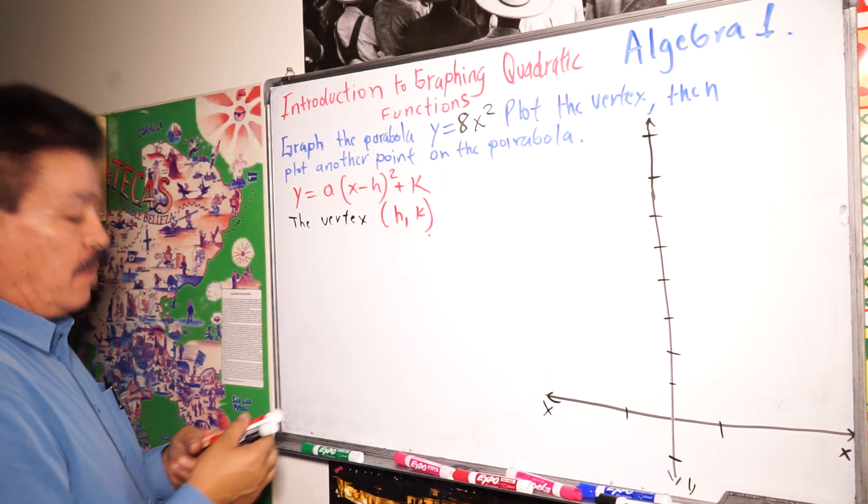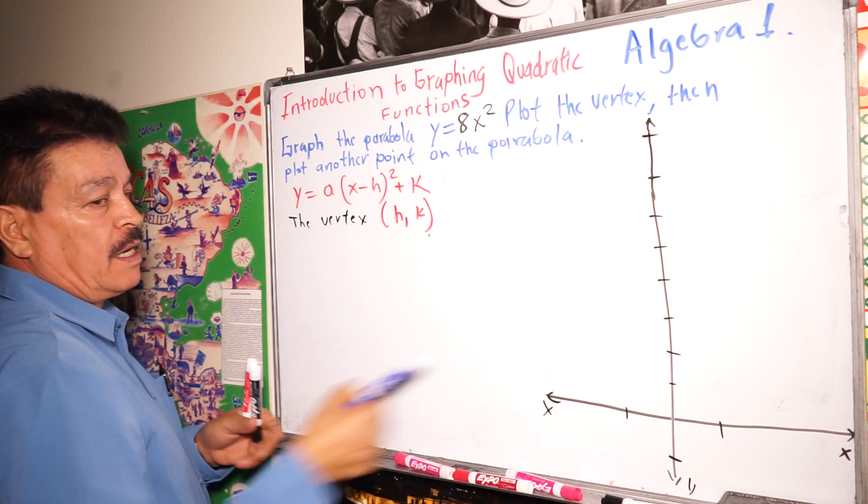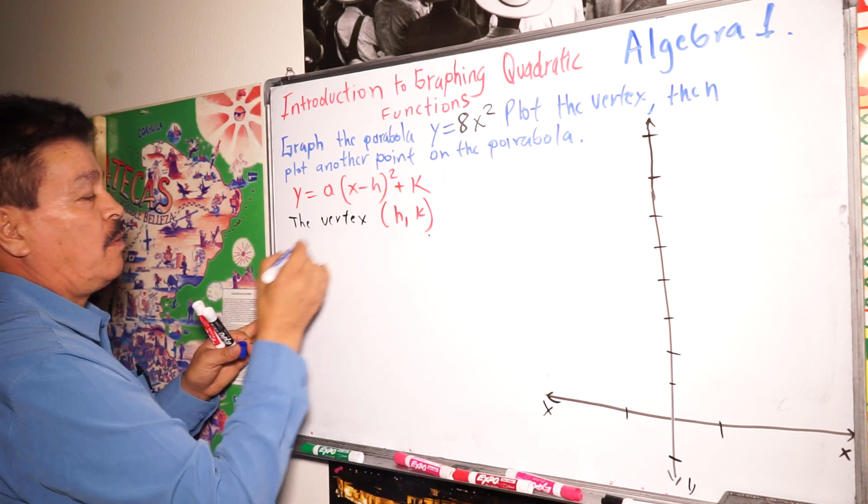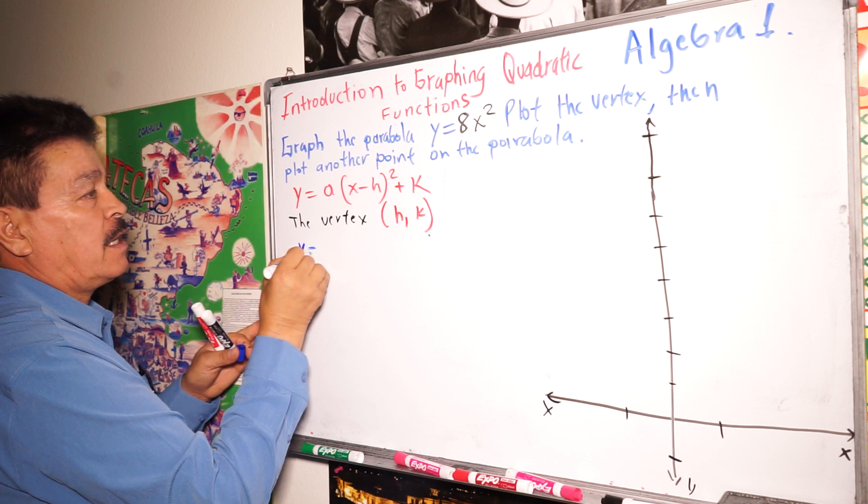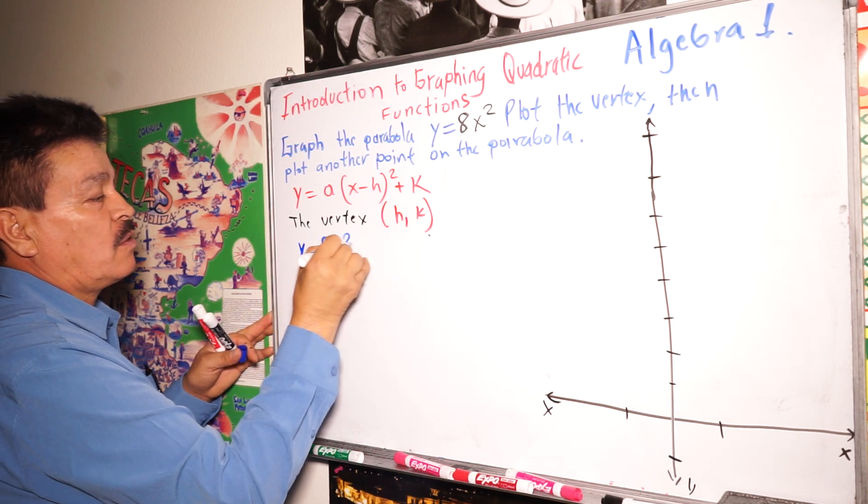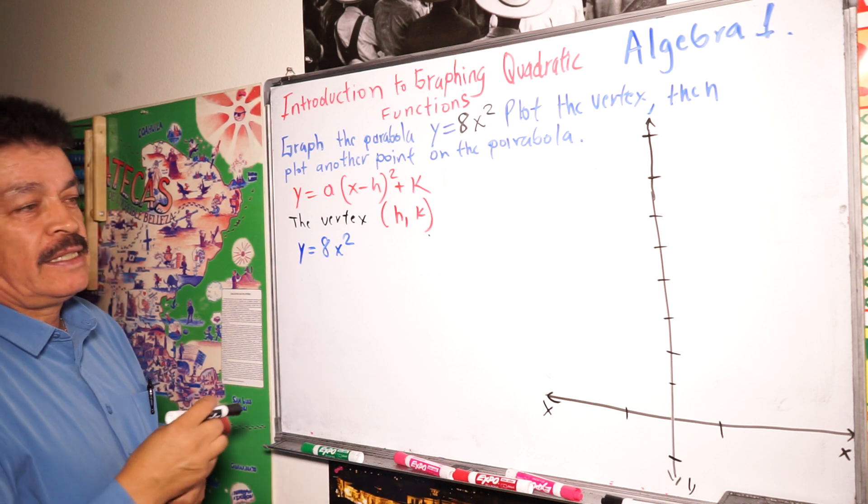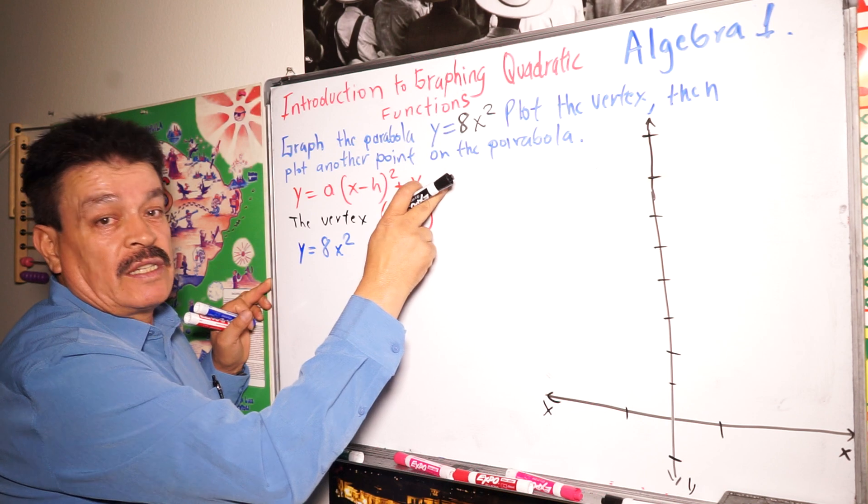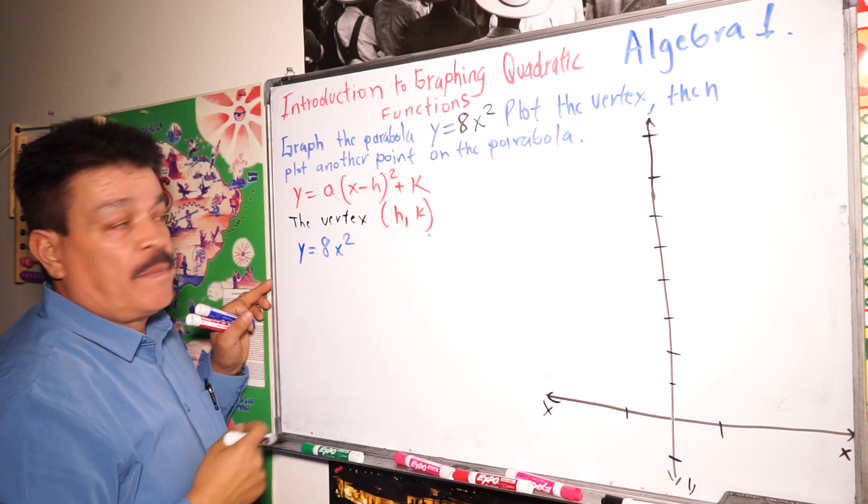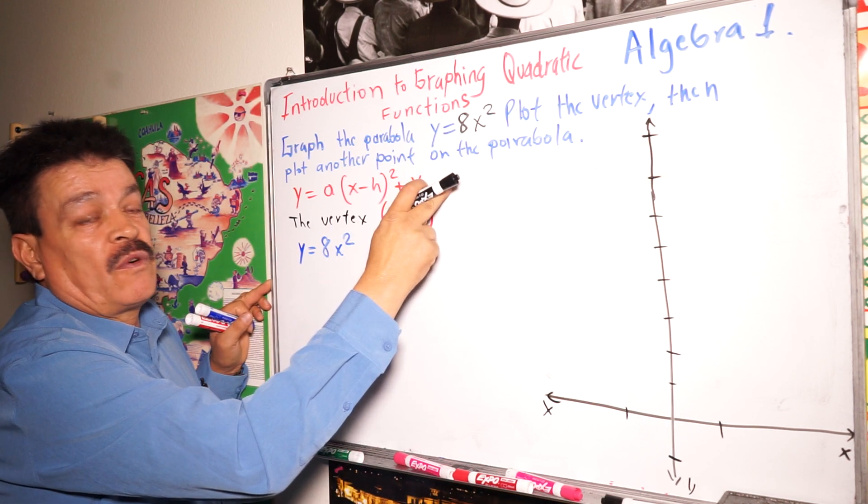So we have here, we have y, our problem is y equals 8x to the second power. Next step, we use this vertex form of the parabola. This is the formula for the vertex form.